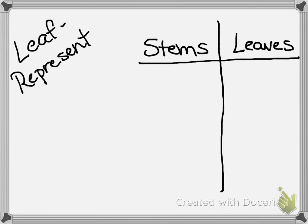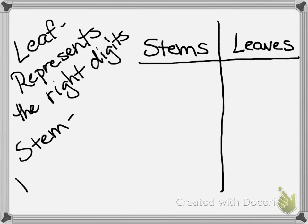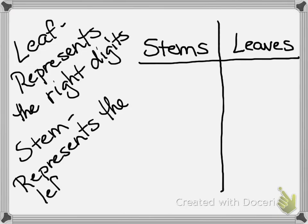Stem and leaf plots are made up of two different parts. The leaf is going to be on the right side and it represents the right digit — the ones place. The stem is going to be on the left side and it represents the left digit — the tens place. When we get into the hundreds or thousands, it'll be whatever digit is on the left-hand side, but for right now we're just talking about the tens spot.